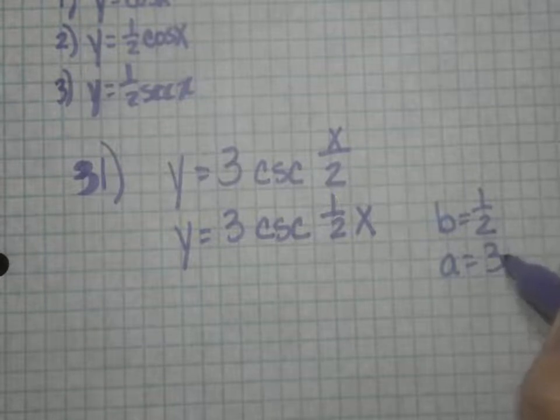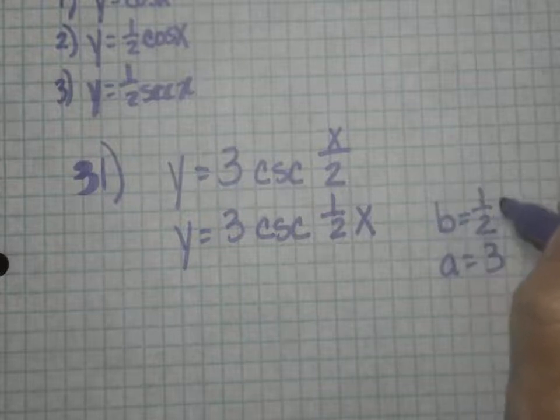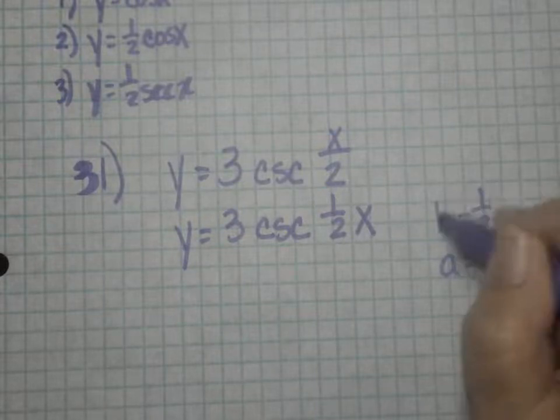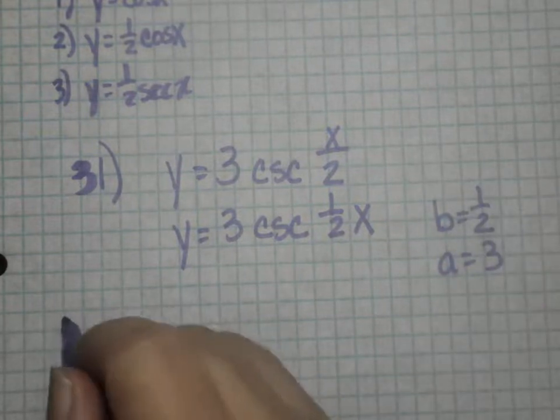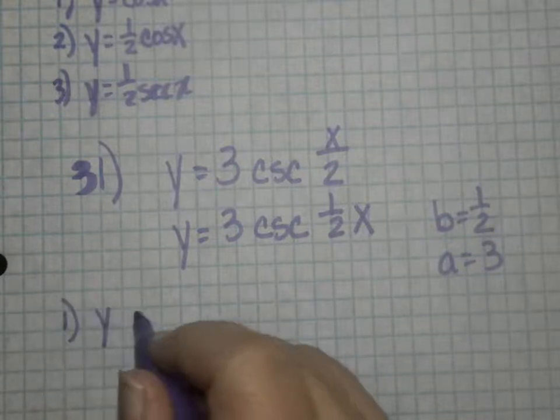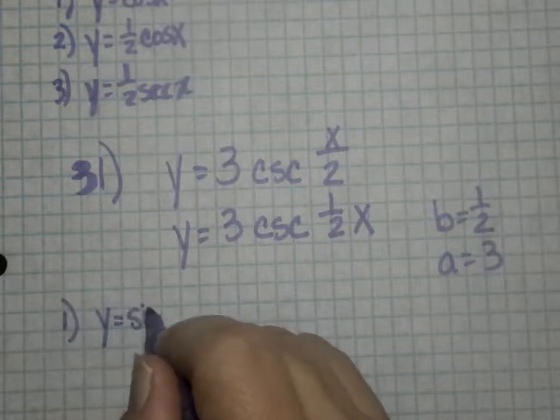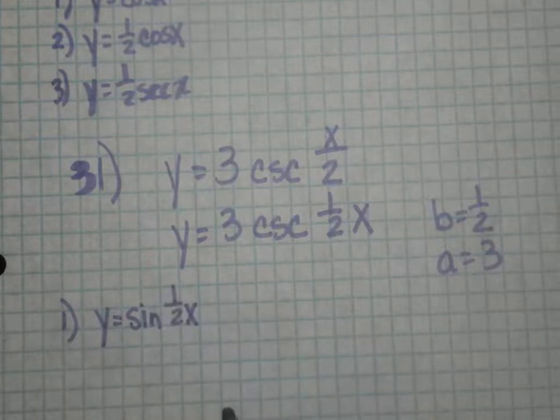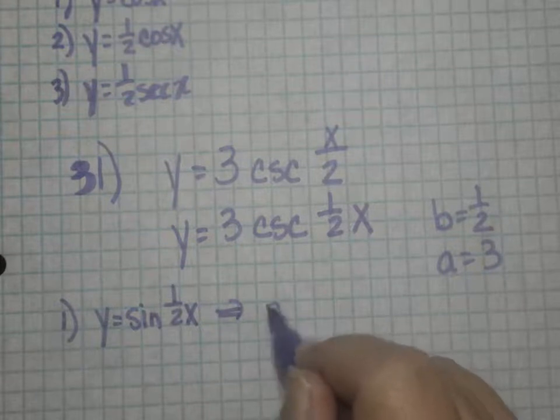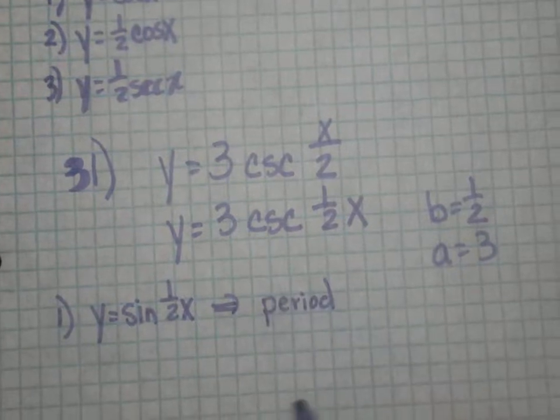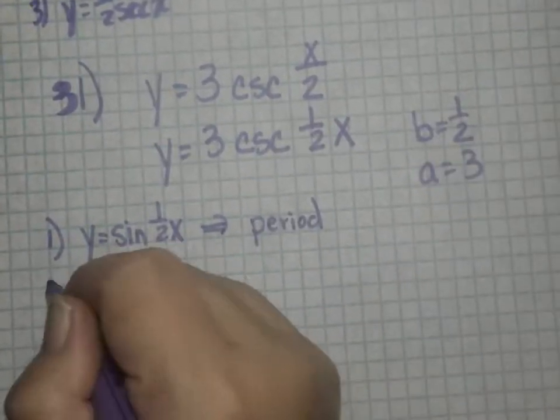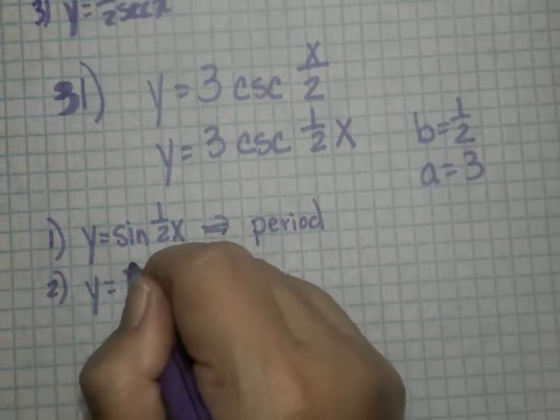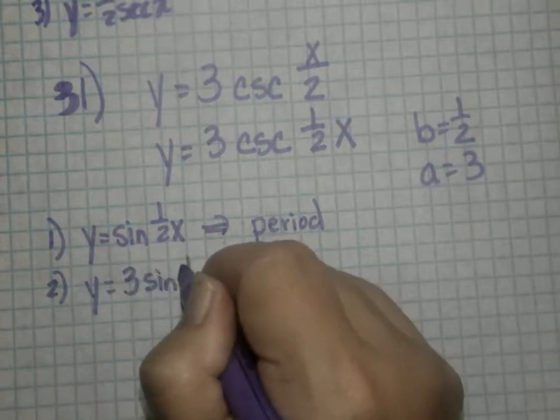So we're going to have a vertical stretch from the number 3, but we're also going to change our period. So this is going to cause a horizontal stretch. So again, I want to start with looking at y equals sine of one half x. And you want to start by thinking, what's your period going to be? Because that way you can mark off your x axis. And then from there you can do 3 sine of one half x.